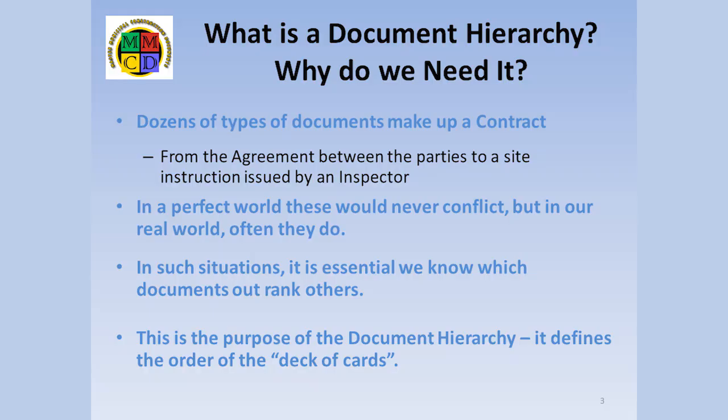Of course, in a perfect world, these documents would never provide conflicting information. Unfortunately, we don't live in that perfect world. We have to expect that amongst these thousands of pages of instructions to the contractor, there will be some conflicting directions. So, how does the contractor know which to follow?